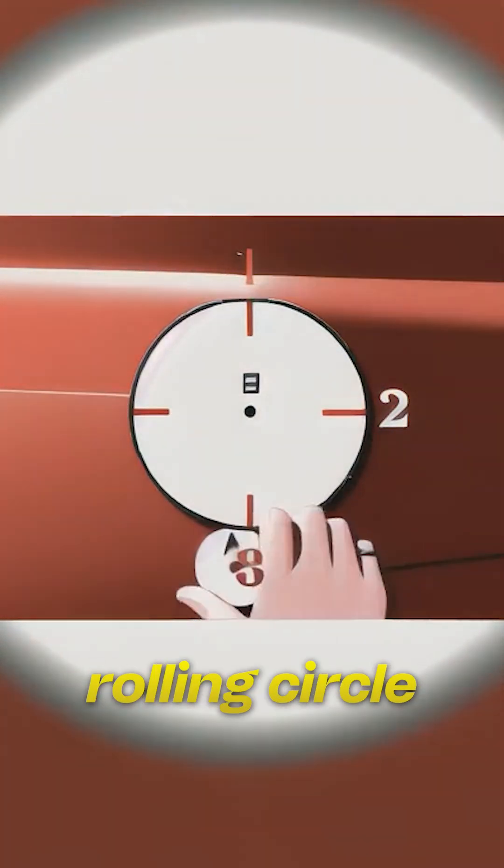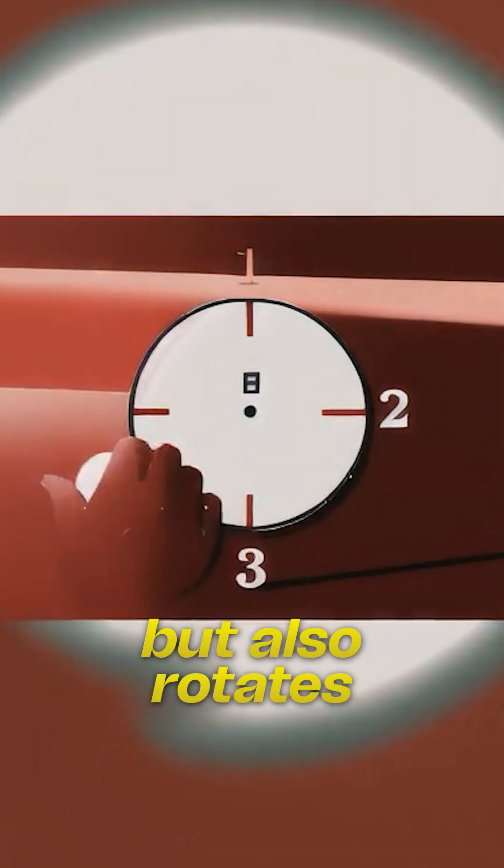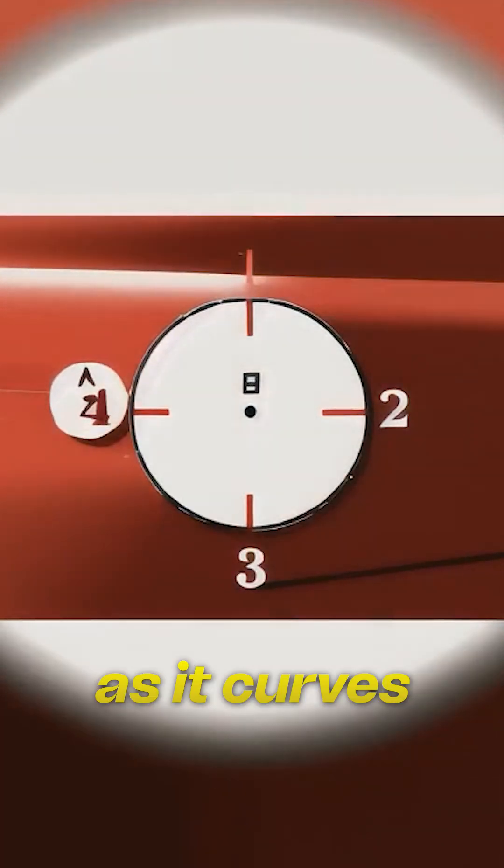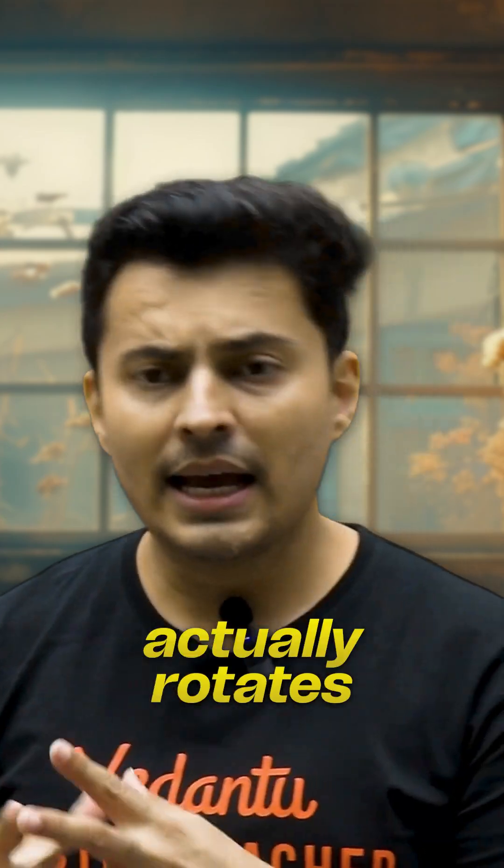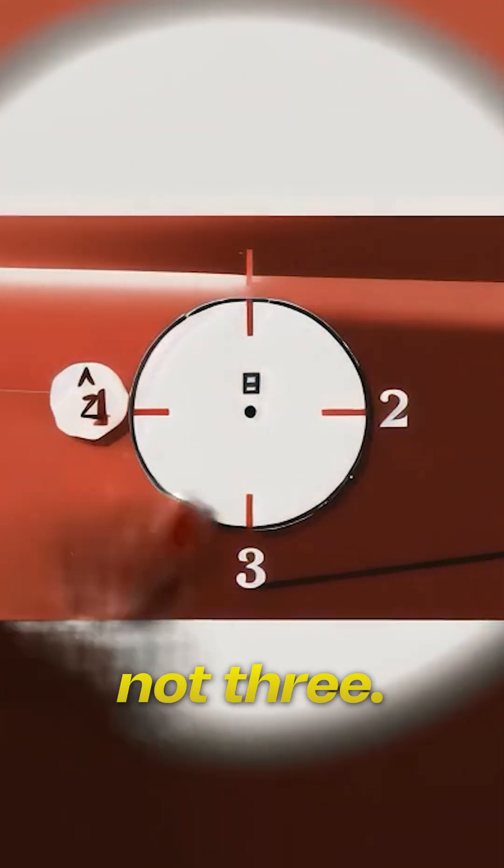This happens because the rolling circle not only travels the distance but also rotates as it curves around the other shape. So circle A actually rotates 4 times, not 3.